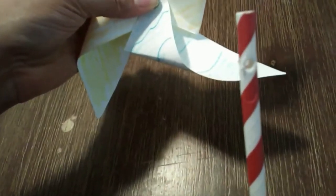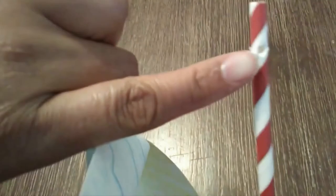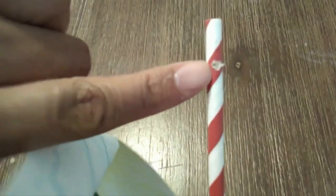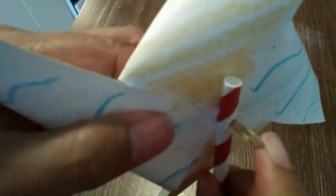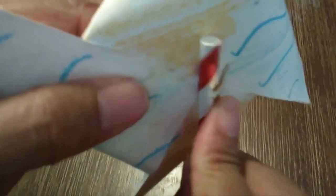Take your straw and you'll notice that there's two holes on one side of the straw. Put the fastener through the holes and secure it to the straw. And there you go. You have a pinwheel.